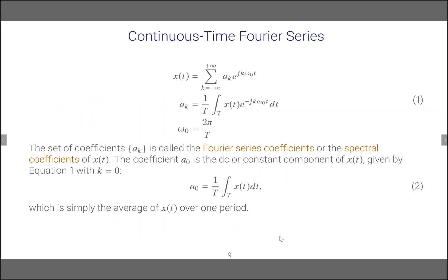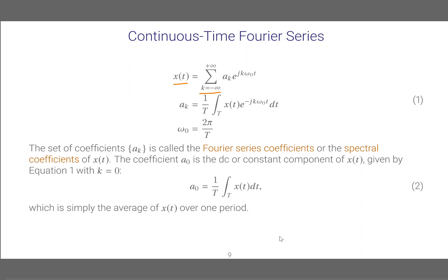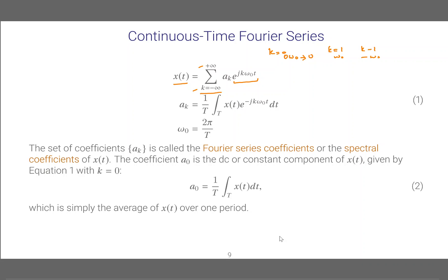The Fourier series means we are representing our time domain signal x(T) as a summation of complex exponentials at different frequencies. The possible frequencies correspond to K going from minus infinity to plus infinity — so at 0, omega-naught, minus omega-naught, and so on. We are representing x(T) as an infinite summation of those different complex exponentials, each multiplied by a coefficient called A_K.